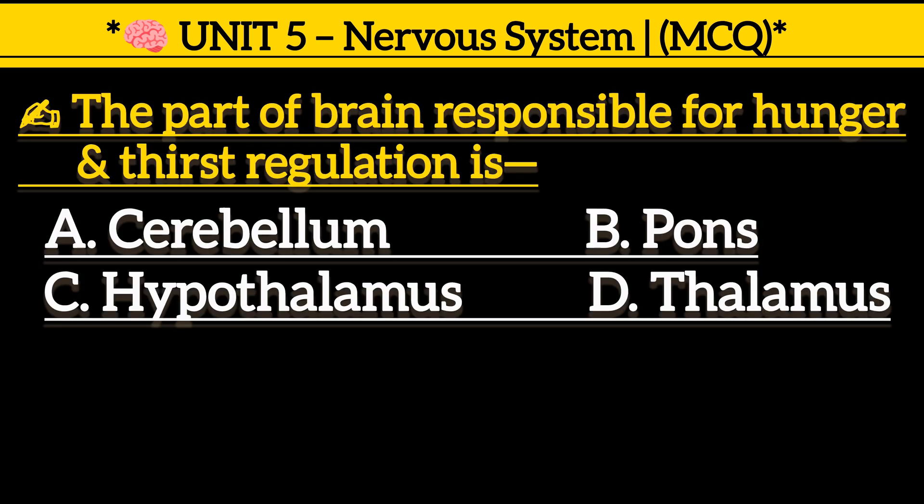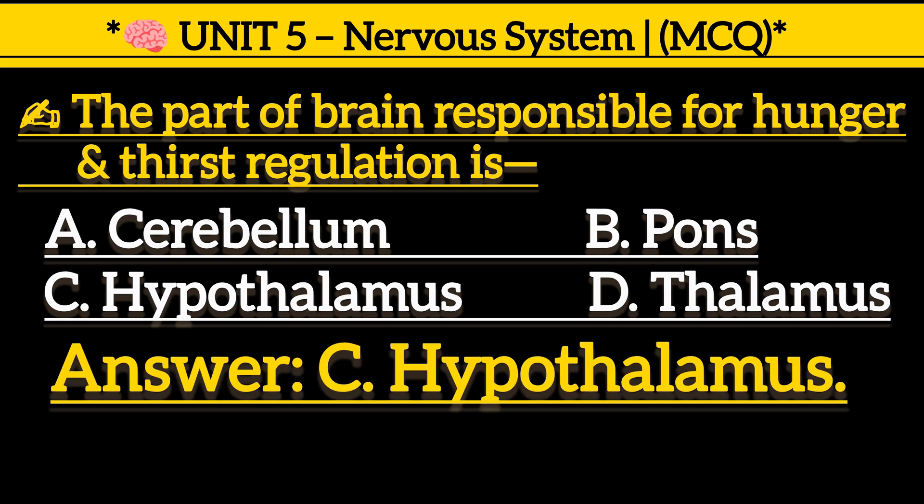The part of the brain responsible for hunger and thirst regulation is: Option A, cerebrum. Option B, pons. Option C, hypothalamus. Option D, thalamus. Correct answer is Option C, hypothalamus.